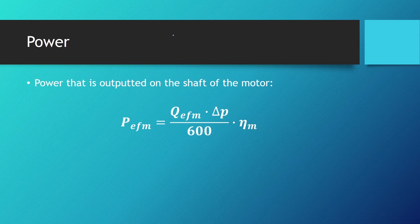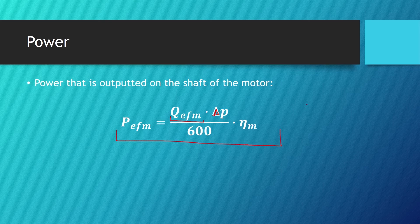Now, power. The power outputted on the shaft of the motor is calculated by taking the effective flow of the motor times the achieved pressure difference, divided by 600 times the efficiency of the motor. When you put flow in liters per minute and the achieved pressure difference in bars, what you get from this equation is kilowatts.